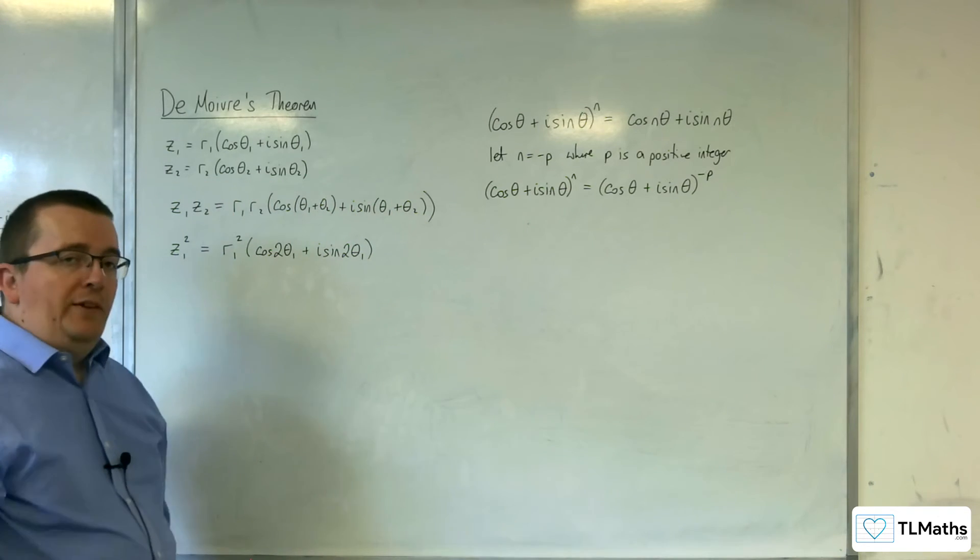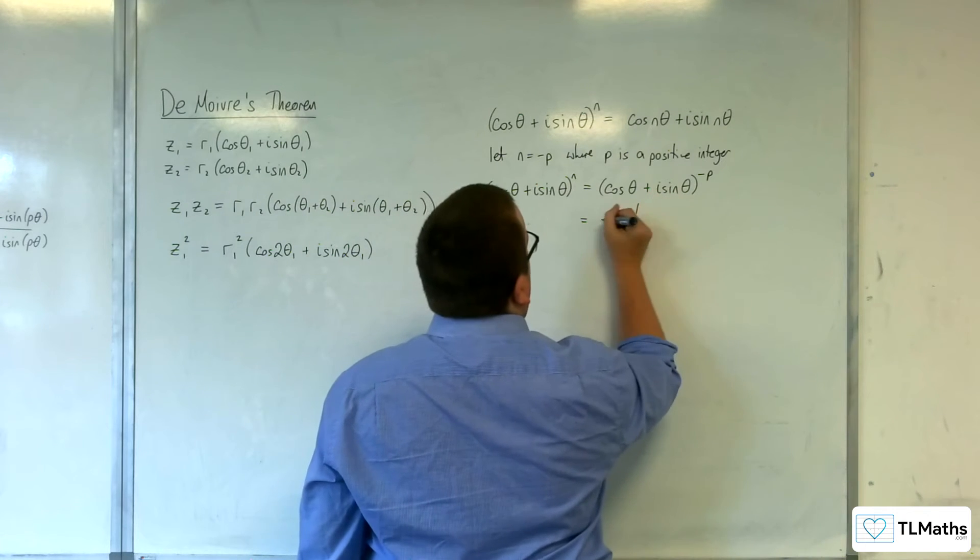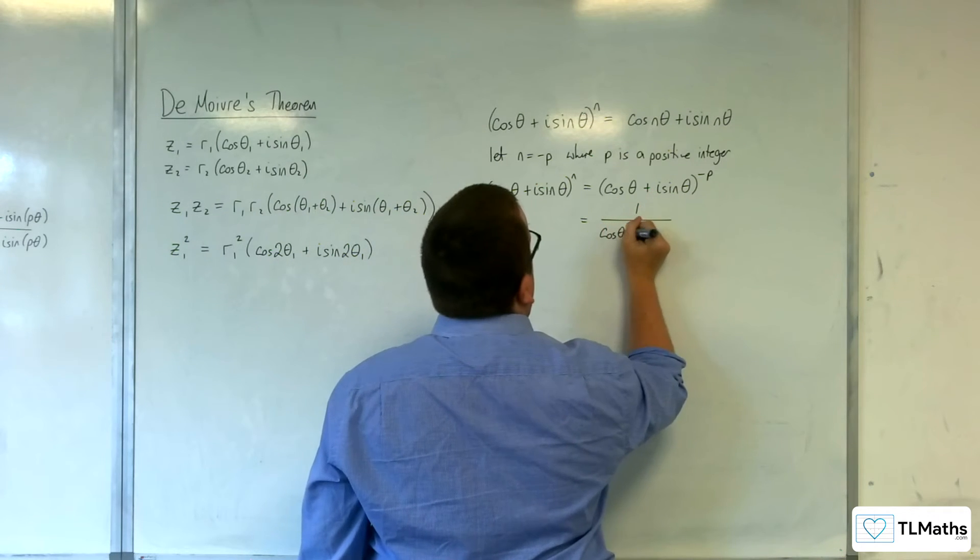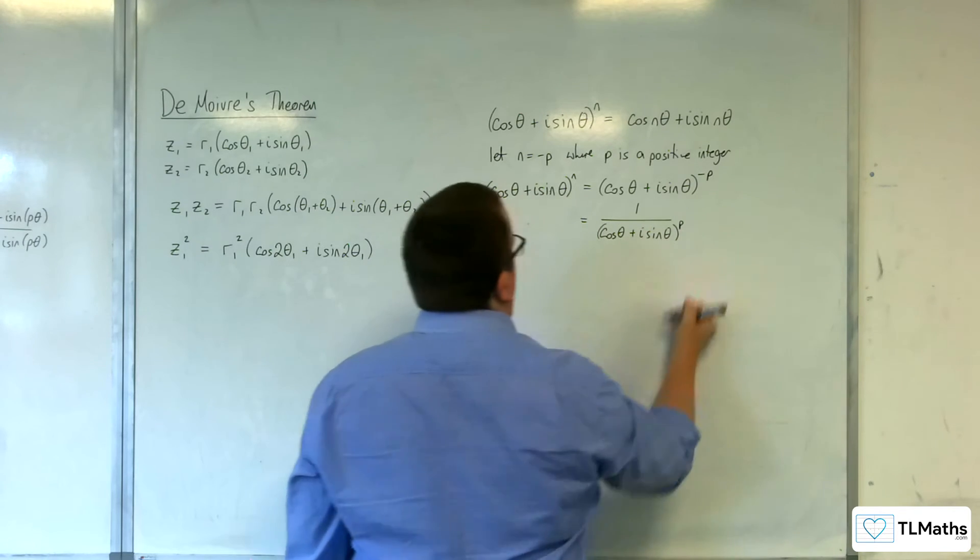So I've replaced the N with minus P. Now, that is the same as one over cosine theta plus i sine theta to the P.